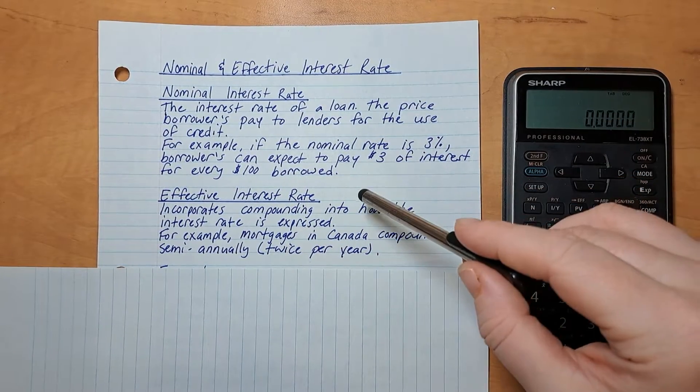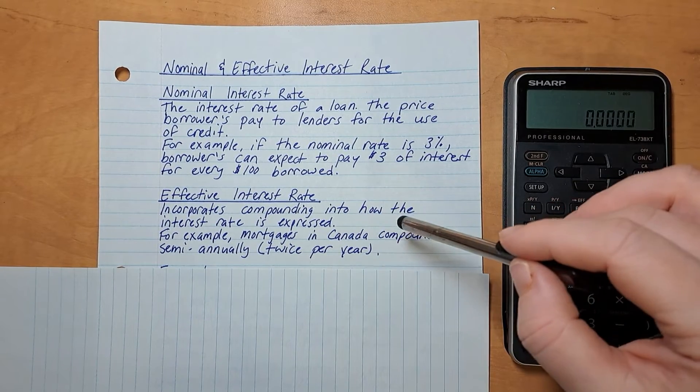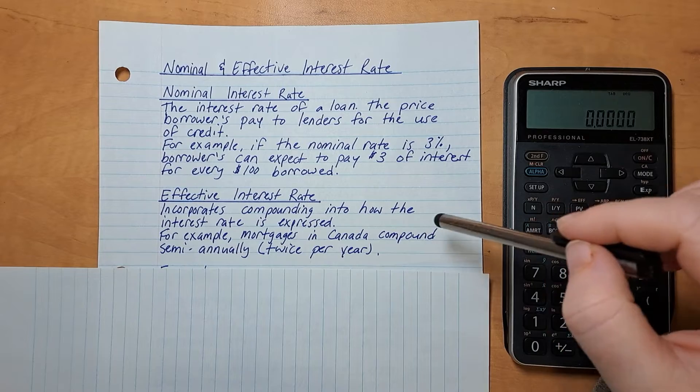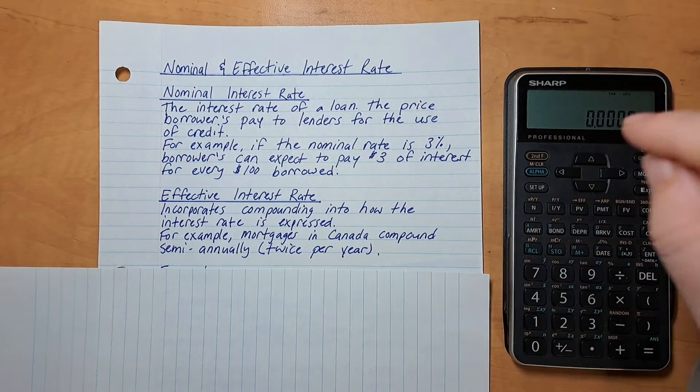Now the effective interest rate incorporates compounding into how the interest rate is expressed. For example, mortgages in Canada compound semi-annually, which is twice per year. So let's look at an example of this.